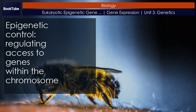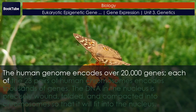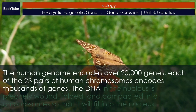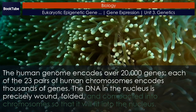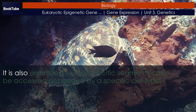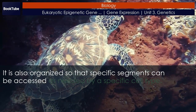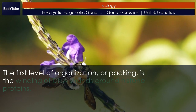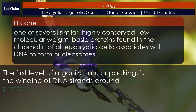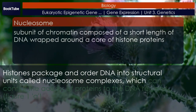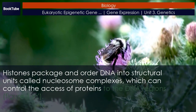The human genome encodes over 20,000 genes. Each of the 23 pairs of human chromosomes encodes thousands of genes. The DNA in the nucleus is precisely wound, folded, and compacted into chromosomes so that it will fit into the nucleus, and organized so that specific segments can be accessed as needed by a specific cell type. The first level of packing is the winding of DNA strands around histone proteins. Histones package and order DNA into structural units called nucleosome complexes, which can control the access of proteins to the DNA regions.